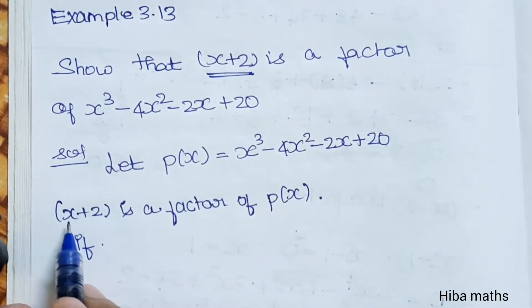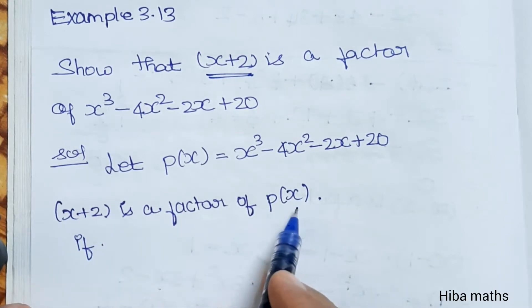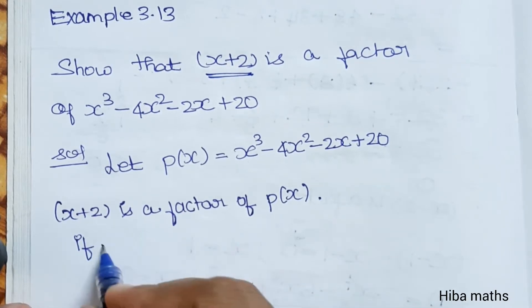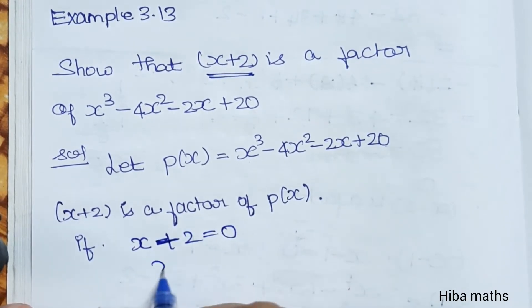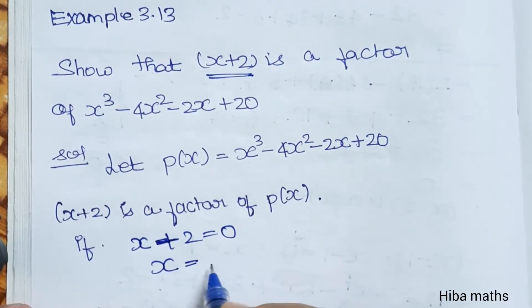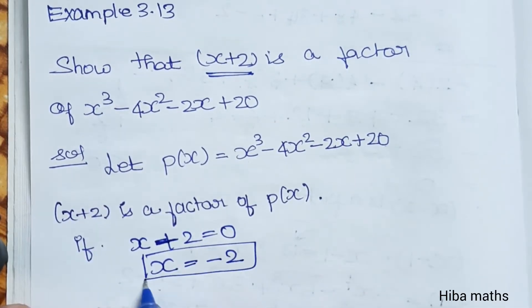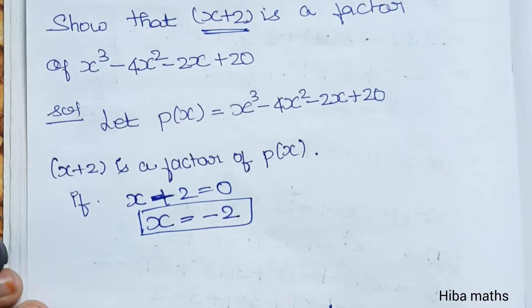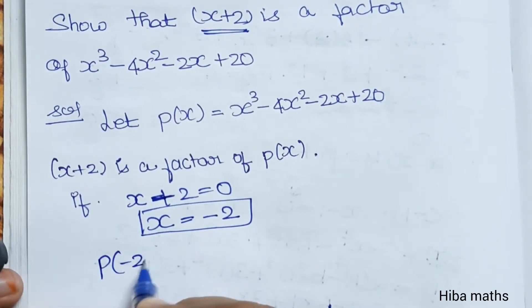x plus 2 is a factor of p of x. Set x plus 2 equal to 0, then x is equal to minus 2. So we evaluate p of minus 2.